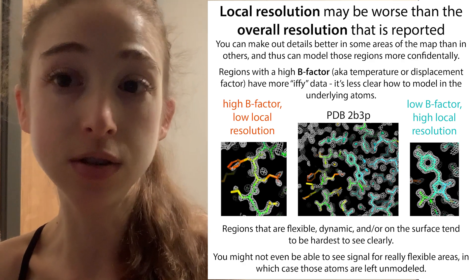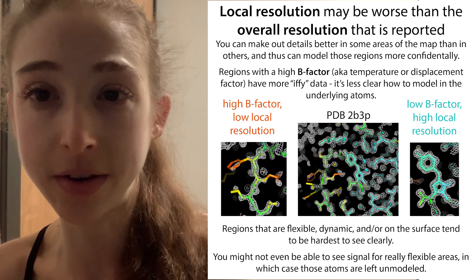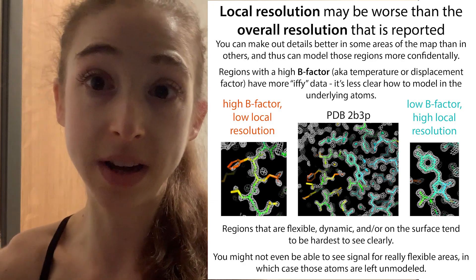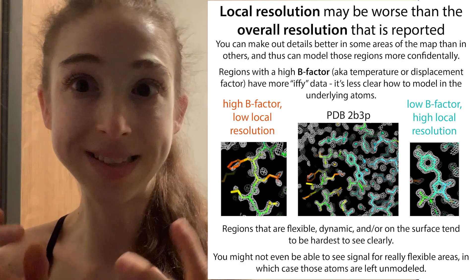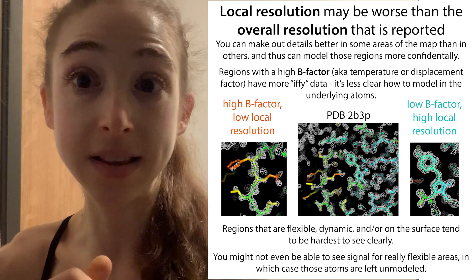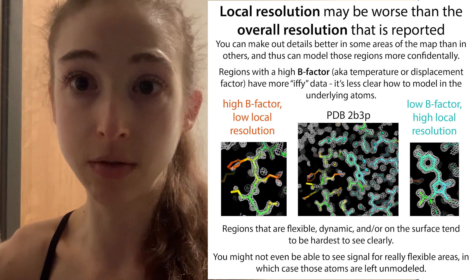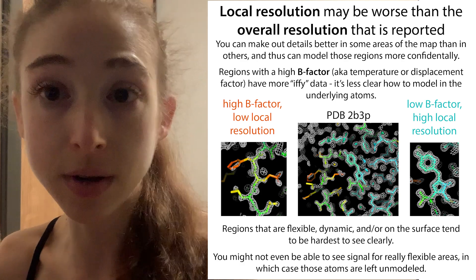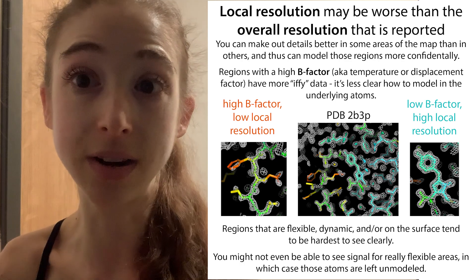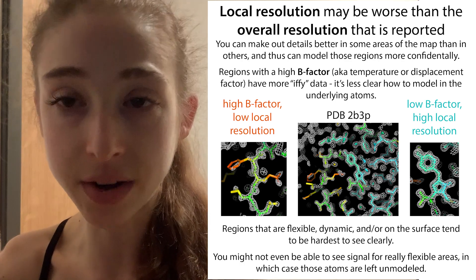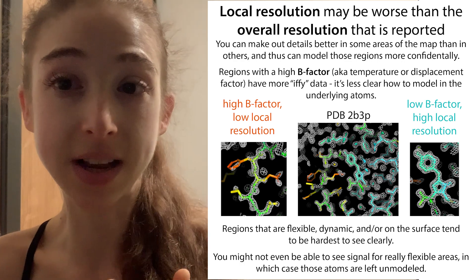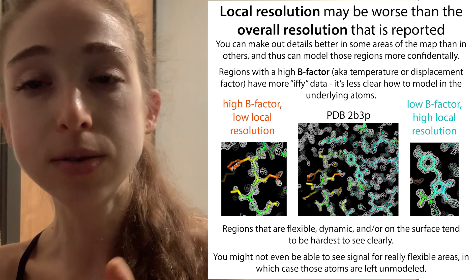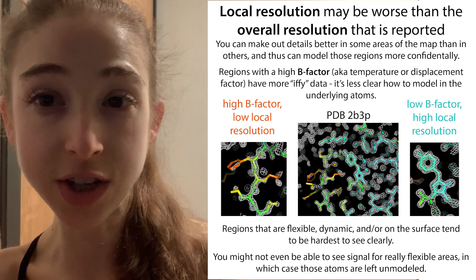It's really important to know that the resolution can vary at different sites within the structure. Flexible, dynamic regions of a protein — or surface-exposed regions — are harder to see clearly. It's like taking a photo of runners in a race: the runners look blurred, but the spectators behind them are crisp. In structural biology, flexible regions that move around a lot have a high B-factor, also called the temperature or displacement factor. A high B-factor means we're less confident about the actual location of those atoms.